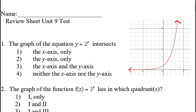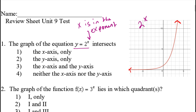First things first, for number one they're asking about the equation y equals 2 to the power of x. I know this is an exponential function because I have a variable in the exponent. I went to my calculator and graphed this already. This is what the graph of 2 to the power of x looks like, and the question asks what does it intersect?